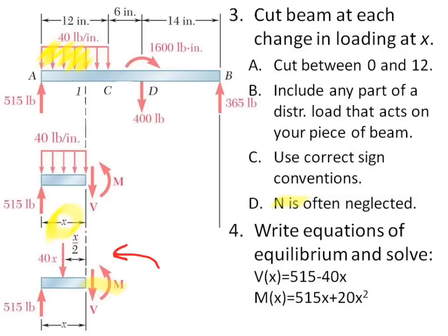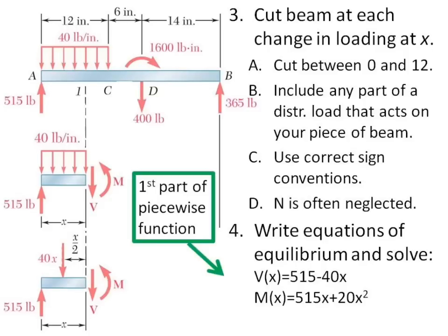Write your equations of equilibrium for this portion of your beam and solve. So V(x) and M(x) are given here. They're functions of X because I have down here a load that includes the distance, the 40 times X, and I have a distance that is simply X. So these are going to be functions of X that will let us graph them. It's the first piece of my piecewise function.